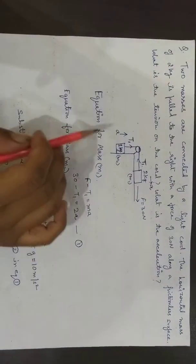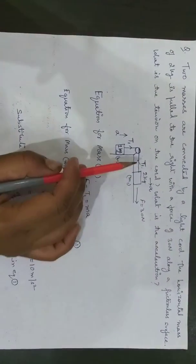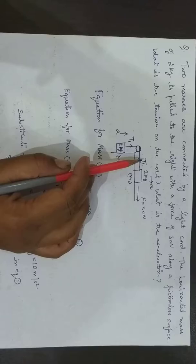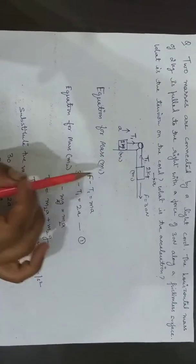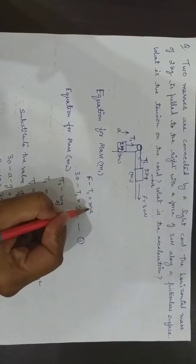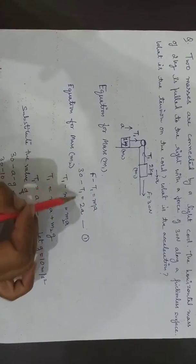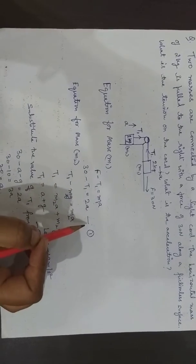Now according to our laws of motion, the equation for mass 1 will be—let's assume that T1 is the tension in the wire. So F minus T1 equals MA, that is M1A. Substitute the values to get the equation. Let this be equation number 1.